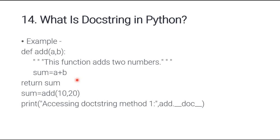Question number fourteen: what is a docstring in Python? A docstring is a string mentioned in triple double quotation marks inside a function. For example, inside `def add(a, b)`, the docstring might say 'This function adds two numbers.' You can access the docstring using the `__doc__` attribute — for example, `add.__doc__` will print the docstring in the output.